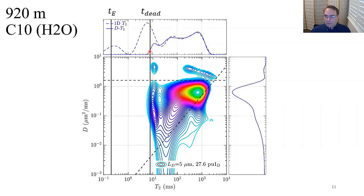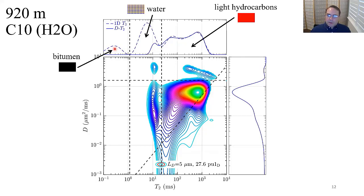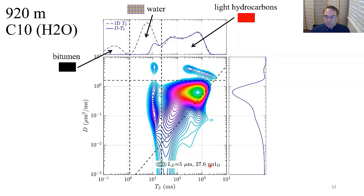By placing T2 cutoffs shown as vertical dashed lines, we can identify fluids: on the left the short T2 is bitumen; slightly longer T2 is water in the micritic calcite; and to the right is the light hydrocarbon region — the light hydrocarbons we want to produce. The porosity here is quoted as 27.6 PU₁, where we keep the hydrogen index equal to one since this is a mixed-saturation signal.